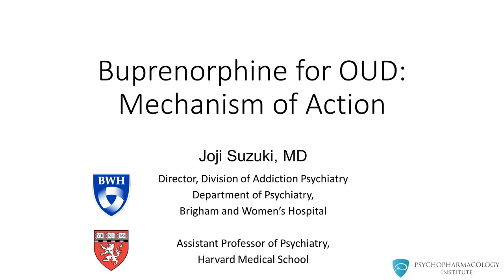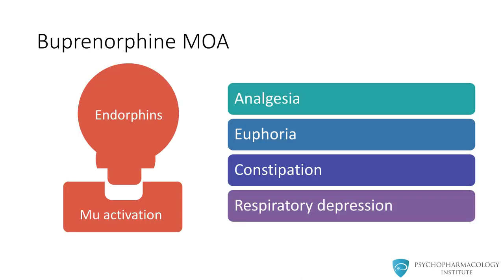Let us move to discussing buprenorphine treatment more specifically. I'd like to review the mechanism of action of buprenorphine in the treatment of opioid disorders, the therapeutic implications of partial agonism, and high affinity for mu opioid receptors.